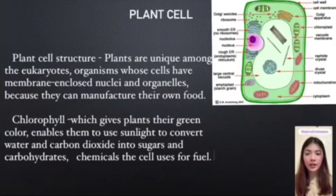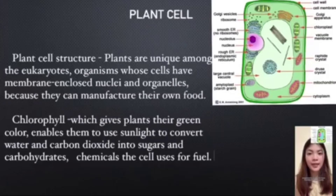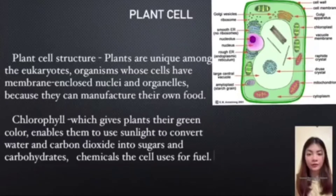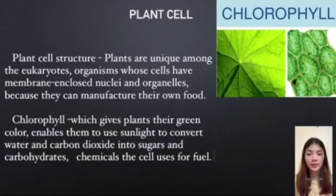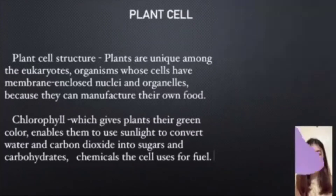Plants' cell structure. Plants are unique among the eukaryotes, organisms whose cells have membrane-bound nuclei and organelles, because they can manufacture their own food. Chlorophyll, which gives plants their green color, enables them to use sunlight to convert water and carbon dioxide into sugars and carbohydrates, the chemicals the cell uses for fuel.